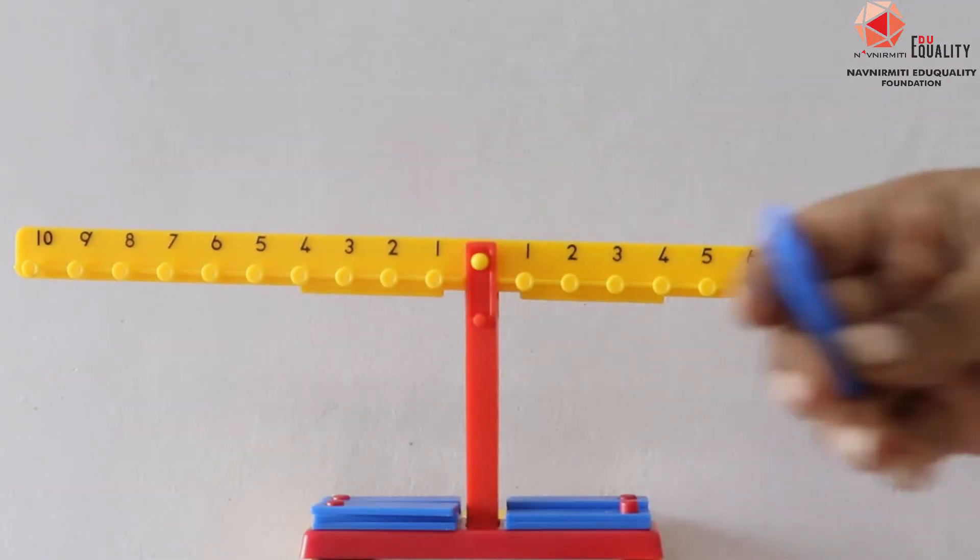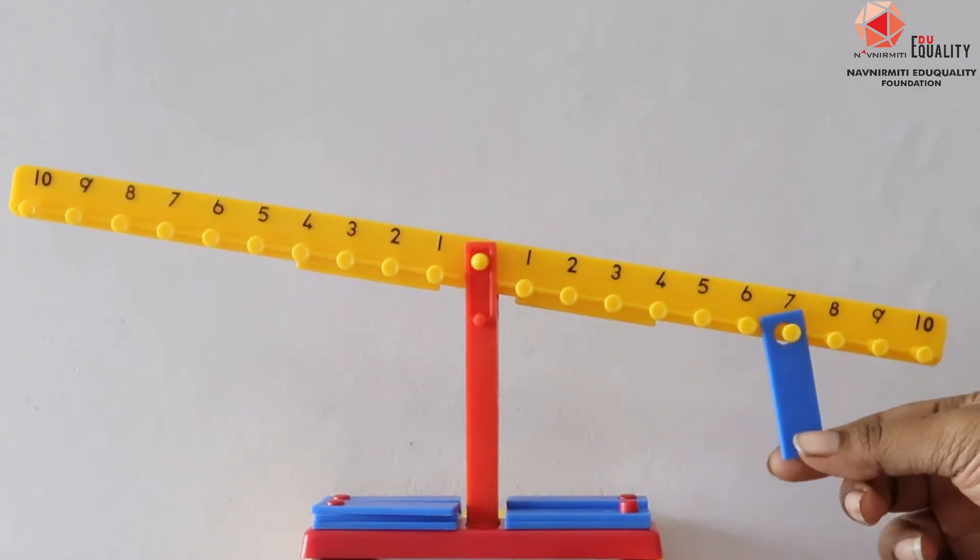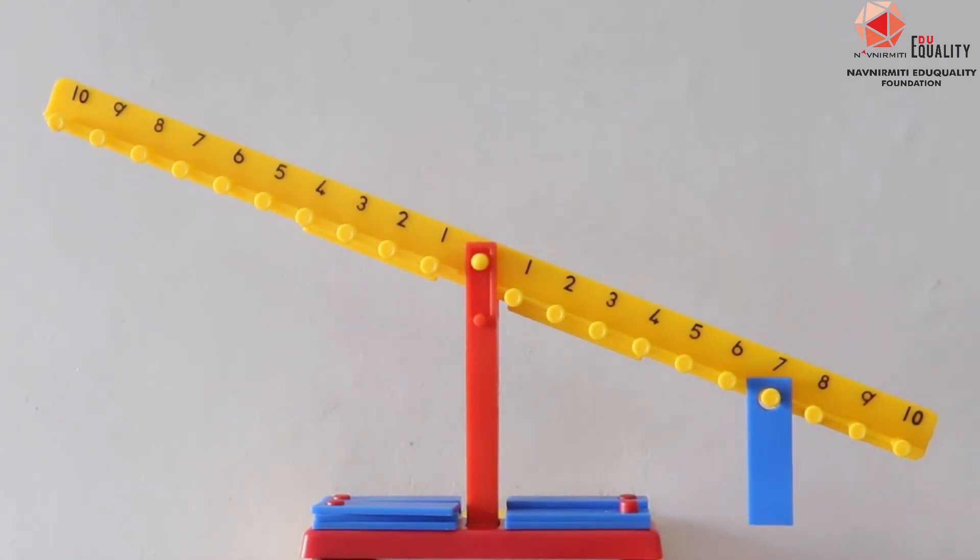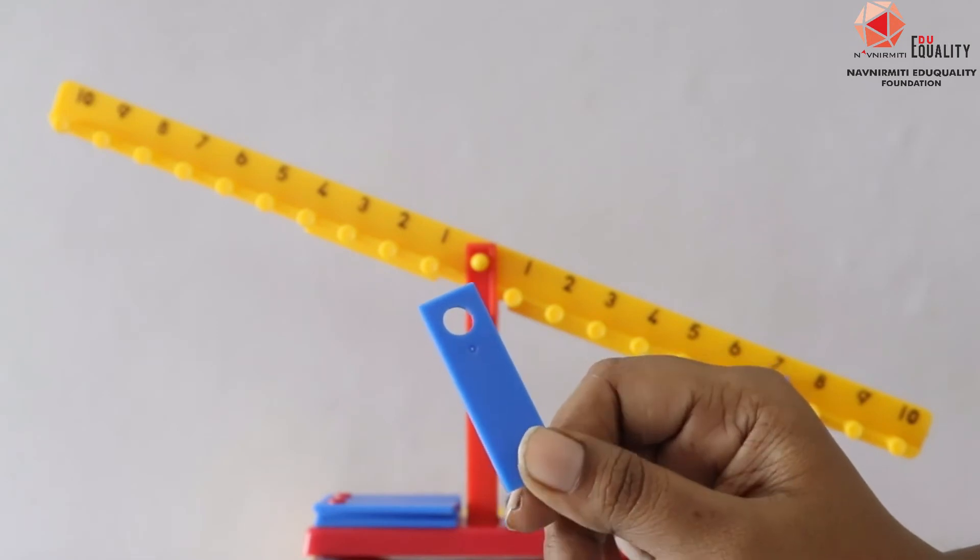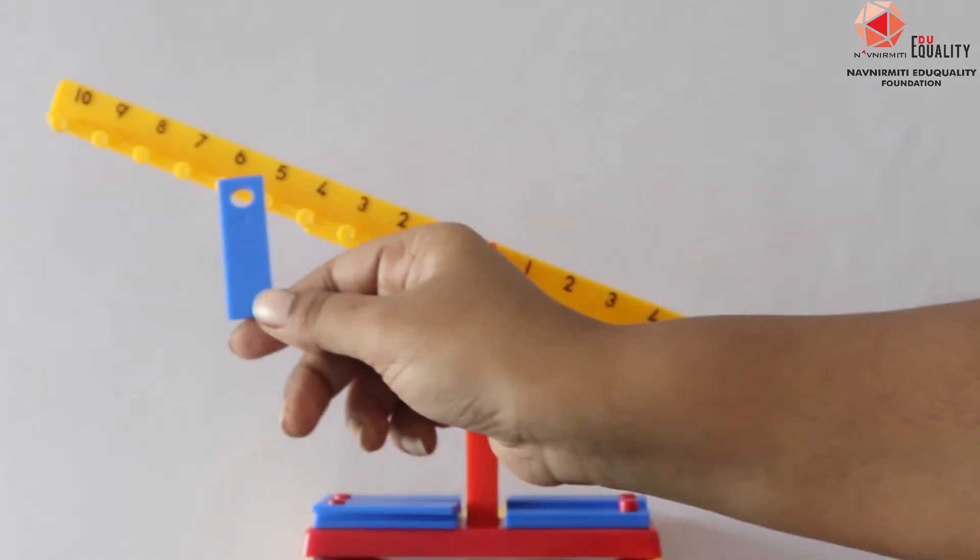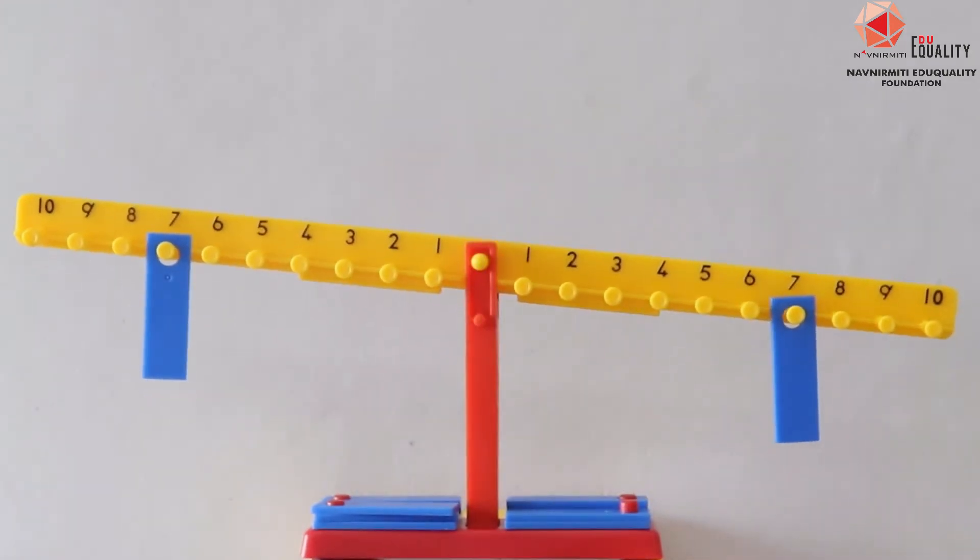Here I have a perfectly balanced number balance. I place one weighing strip on the right arm at position 7. I take another weighing strip and in order to balance it, let me place it on number 7 on the left arm. Well, it is balanced now.